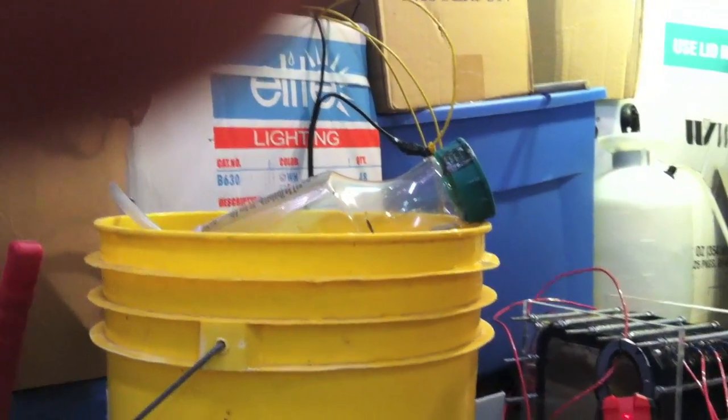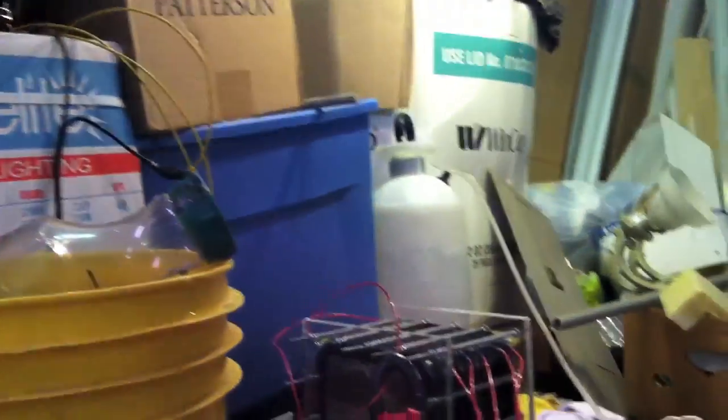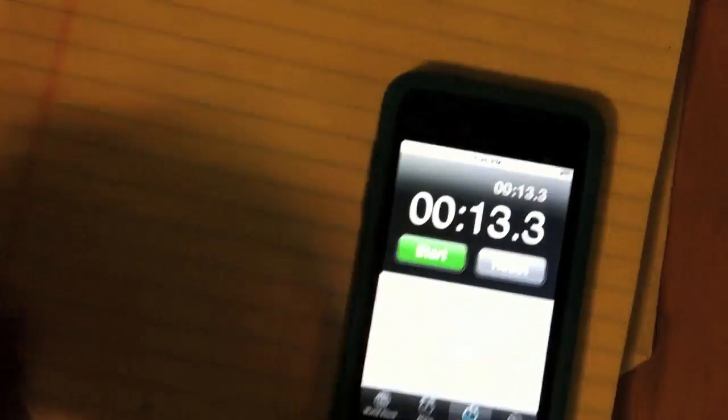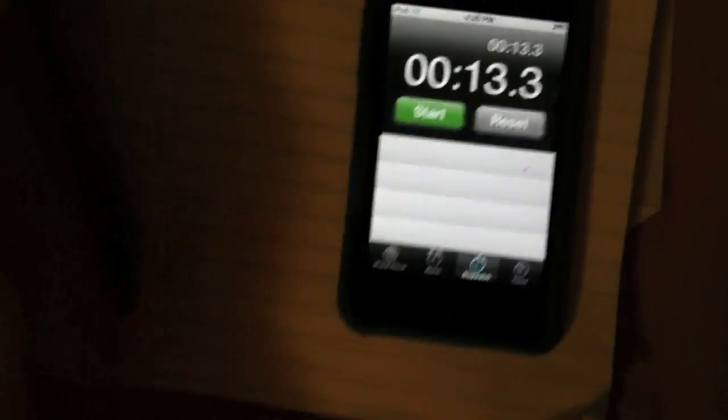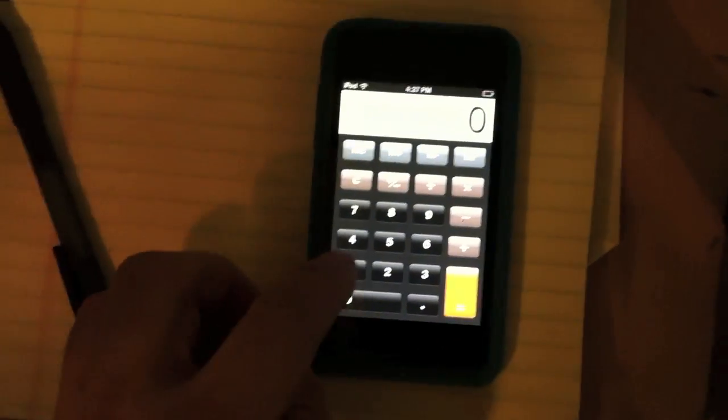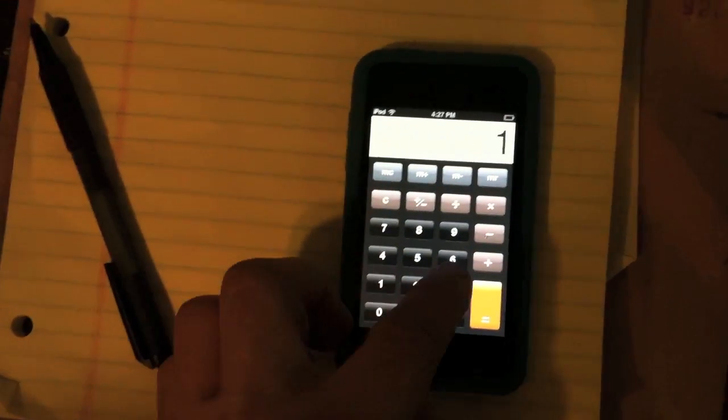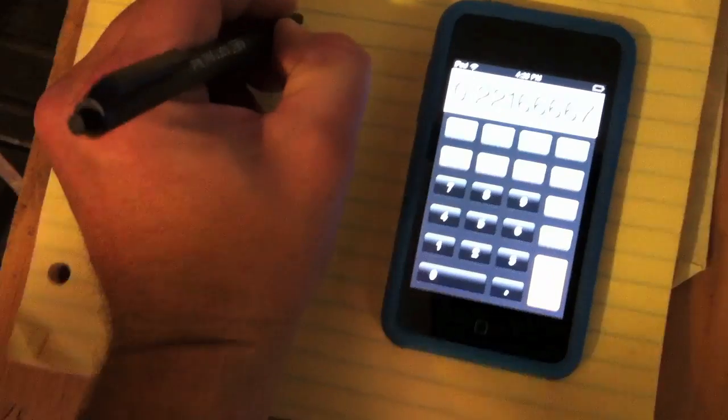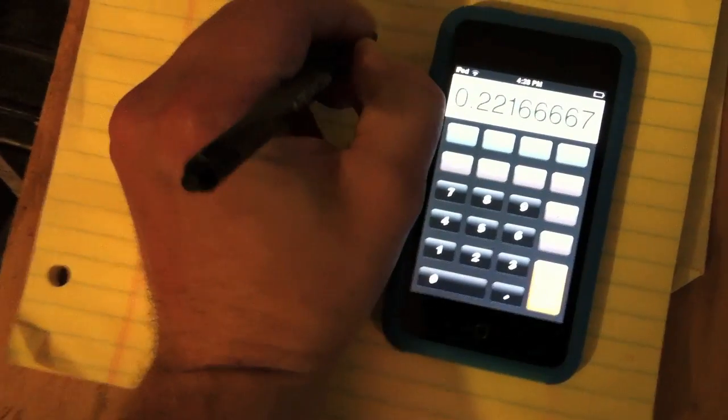So now we are going to go ahead and do the math. 13.3 seconds. So we pull up the calculator. And it was 13.3 seconds. So we see how much that is of a minute. So we do 13.3 divided by 60. That's .22166667. So that's the percentage out of a minute.